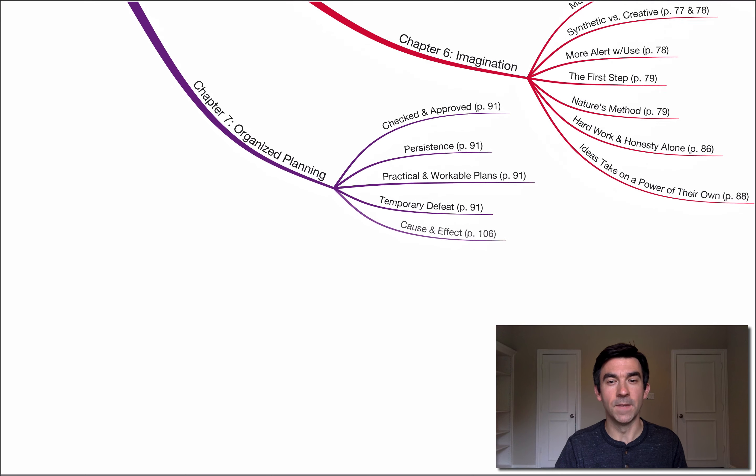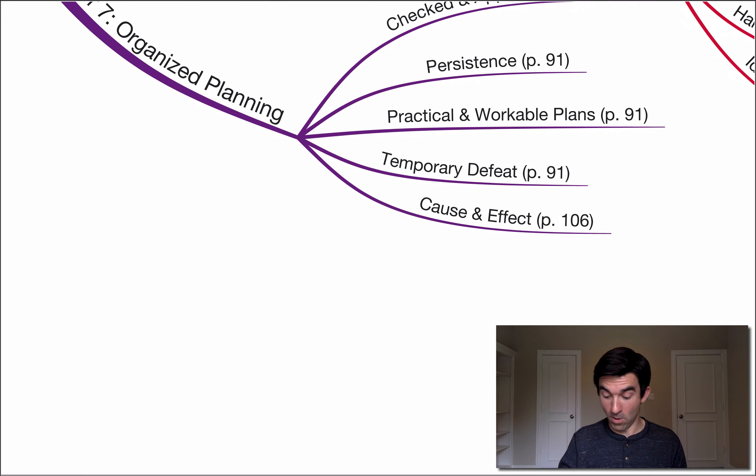Fifth key point here, cause and effect. Now I'm all the way on page 106. We're going to skip past a lot of content here. Napoleon says, we are what we are and what we are because of our own conduct. If there is a principle of cause and effect, which controls business, finance, and transportation, this same principle controls individuals and determines their economic status.